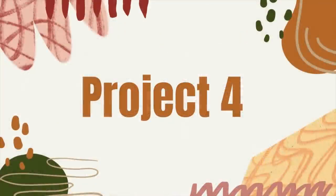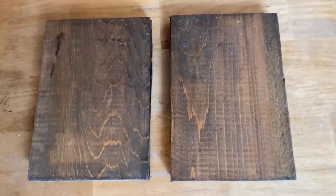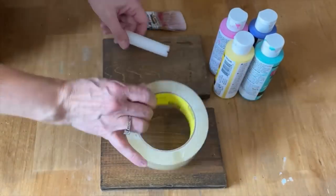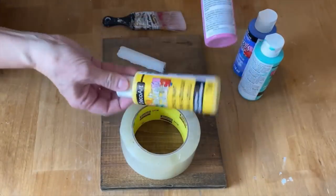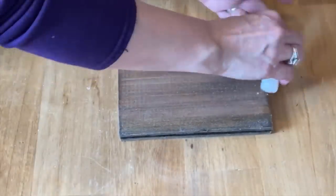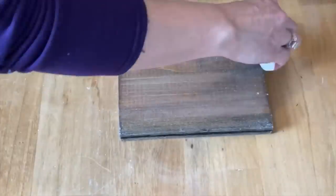Another DIY project that you can use packing tape with is to create a chippy paint effect. I've got a couple scrap pieces of pine that I've stained and you're going to need some acrylic paint, some packing tape and a candle. This is just a candle that I picked up at the dollar store.